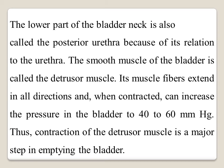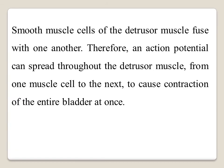When the detrusor muscle contracts, it increases the pressure in the bladder to 40 to 60 mmHg. Thus, contraction of the detrusor muscle is a major step in emptying the bladder. The smooth muscle cells of the detrusor muscle fuse with one another, so action potentials spread throughout the entire detrusor muscle from one cell to the next, causing the entire bladder to contract at once.